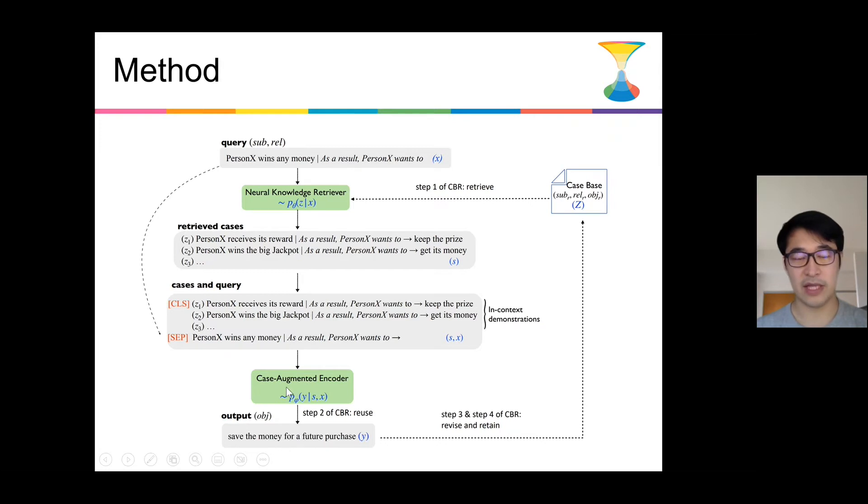The case augmented encoder is to generate the object given the query, consisting of subject and relation, and the output can be further revised and returned back to the case space for further usage.